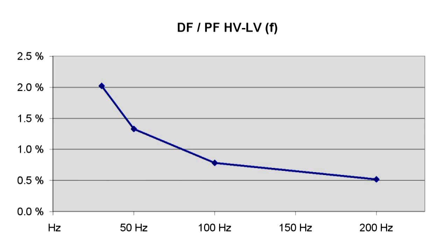A transformer like this distribution transformer with 11kV primary rated voltage and 800kVA typically has higher dissipation factor values.